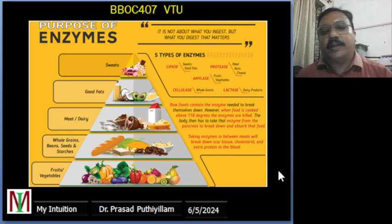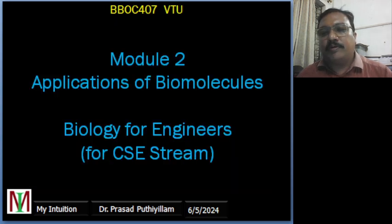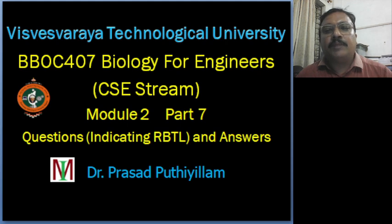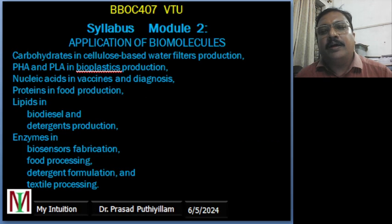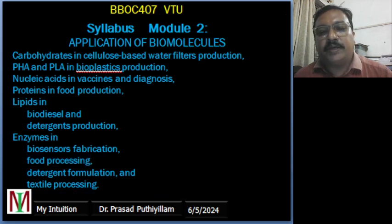Five types of enzymes are mentioned here, though many more exist. This slide gives the importance of enzymes in the food processing industry. Moving on to the introduction of this particular class: this is the Biology for Engineers class series for Computer Science Engineering of Researcher Technology University, module 2, part 7. The syllabus mentioned here covers food processing with enzymes — enzymes in food processing — a very interesting field, which is why I took it separately.